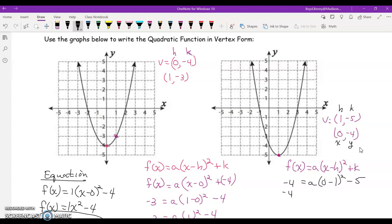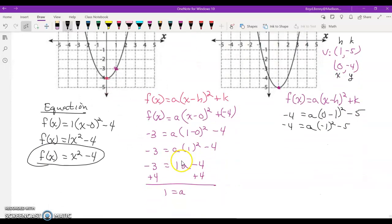Okay, so I've got negative 4 equals a times negative 1 squared minus 5. We'll just keep simplifying that down and solving until we get a all by itself. So, negative 4 equals negative 1 to the second power. It's just going to be 1 times a minus 5. Let's add 5 to both sides. And a equals 1.